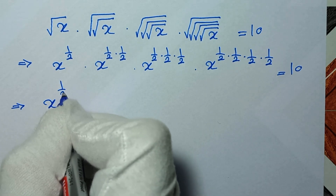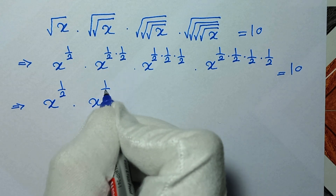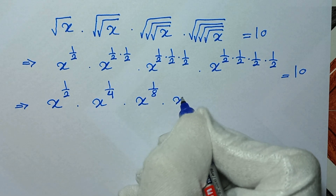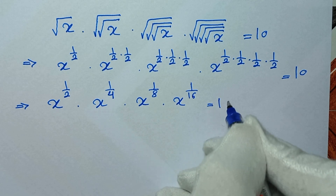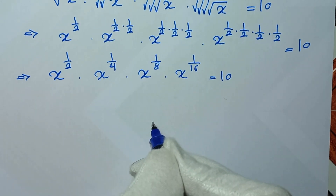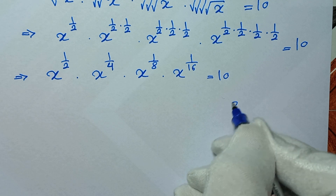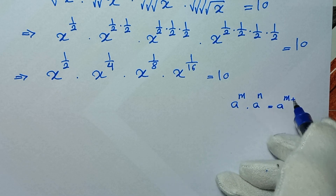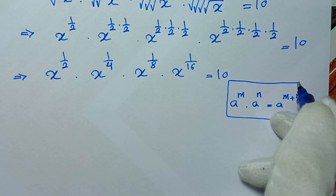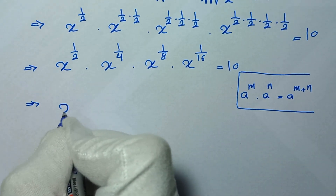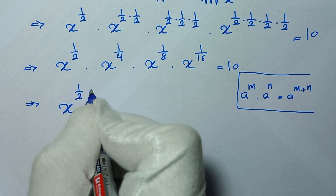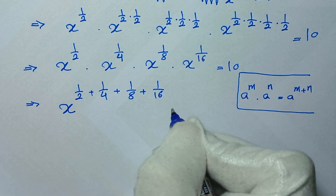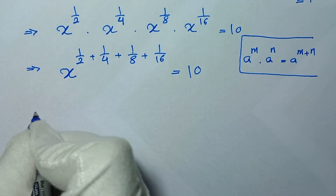So in the next step it will be x to the power of 1/2 times x to the power of 1/4 times x to the power of 1/8 times x to the power of 1/16 equals 10. From the exponential rule, a to the power of m times a to the power of n equals a to the power of m plus n. So we write this as x to the power of 1/2 plus 1/4 plus 1/8 plus 1/16 equals 10.